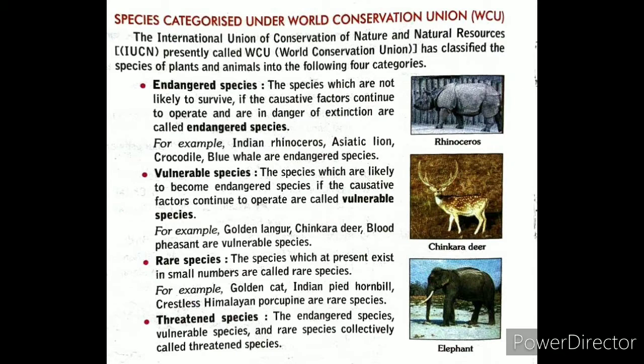IUCN — the International Union of Conservation of Nature and Natural Resources, which is presently called WCU, the World Conservation Union — has classified plants and animals into four categories: Endangered species, Rare species, Threatened species, and Vulnerable species.